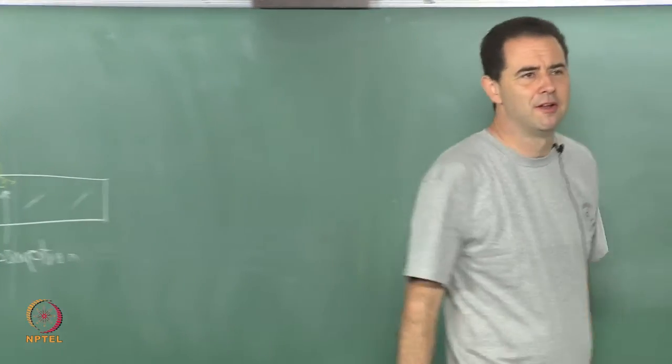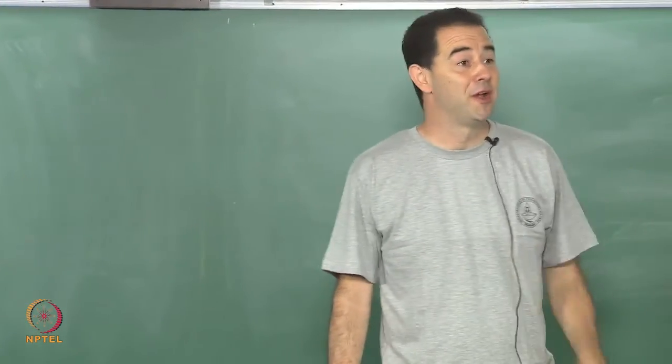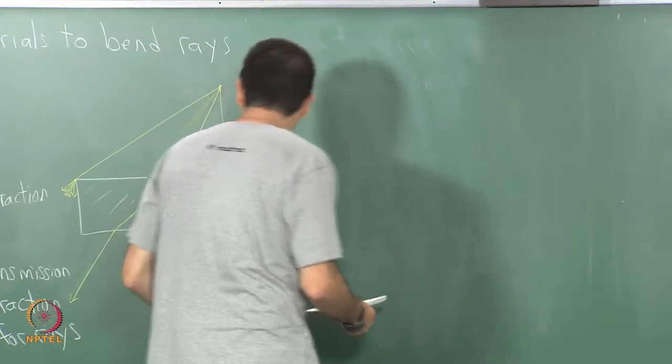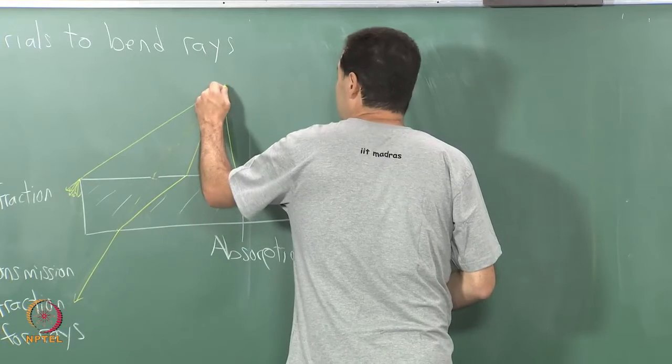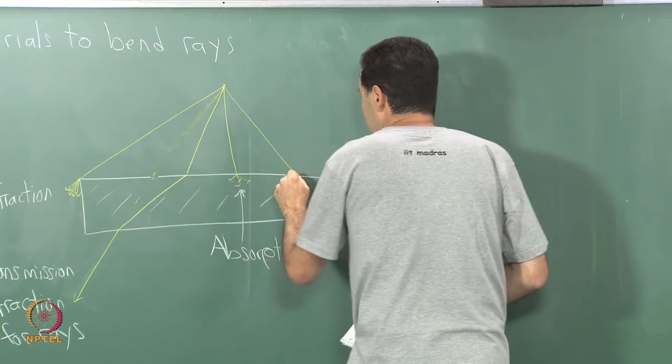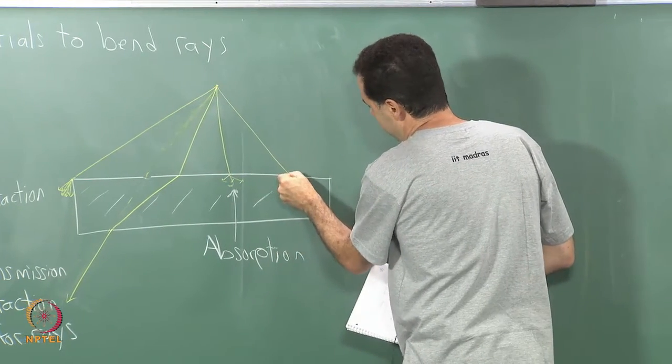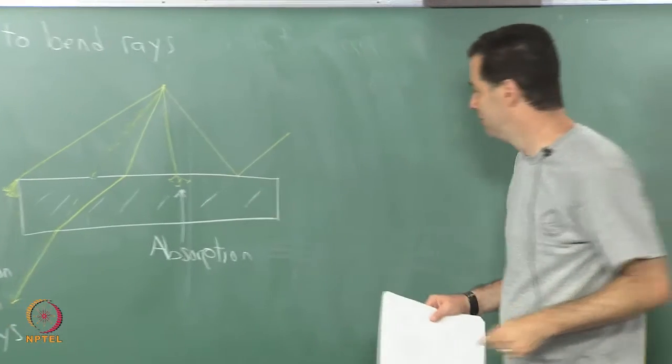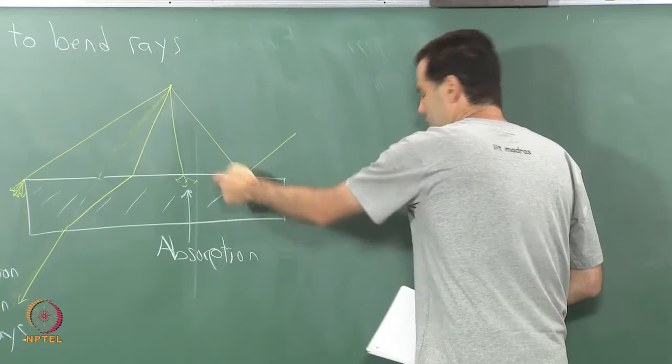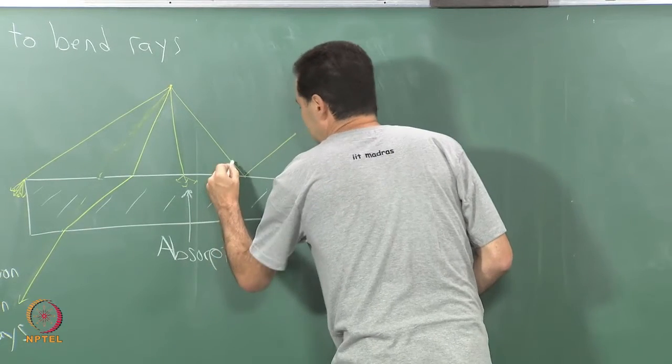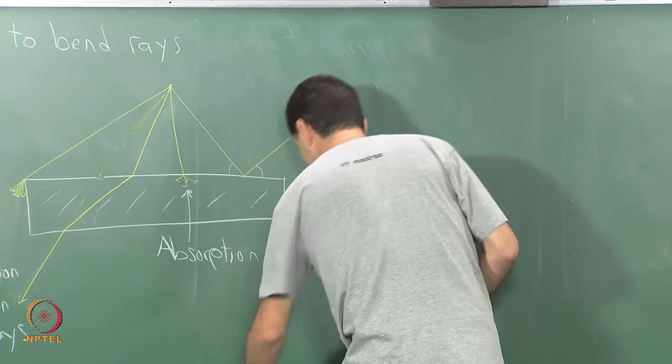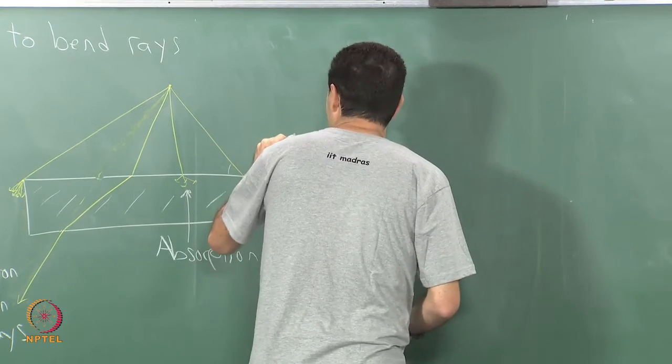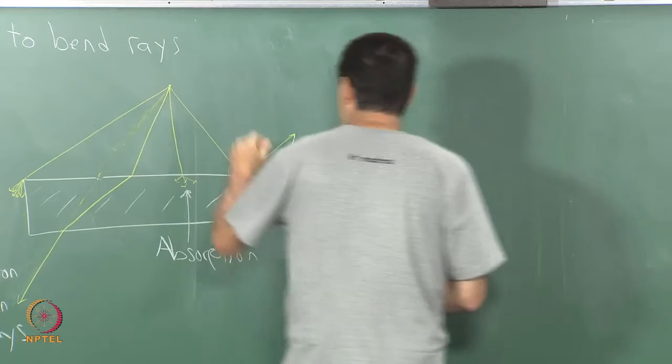What case remains? What else can happen to the light? Reflects away, right. If this surface happened to be a shiny mirror then we get reflection. It comes down like this. Angle of incident should be equal to the angle of reflection. This angle and this angle should be the same and off the ray goes. This is reflection.